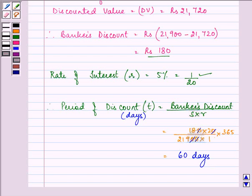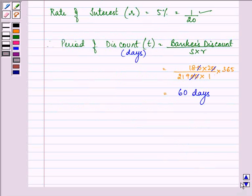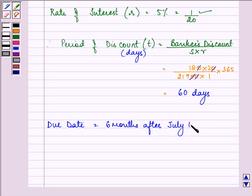With the help of this period of discount, we can find out the required answer. So, the due date of the bill was 6 months after July 10, 2005 plus 3 days of grace.